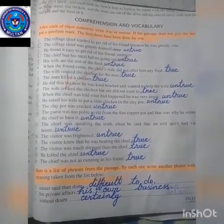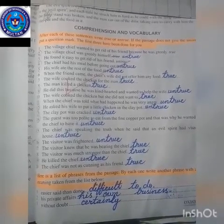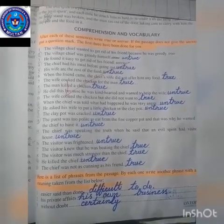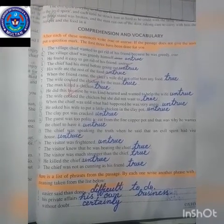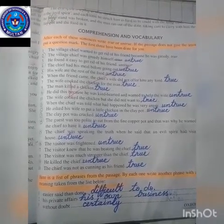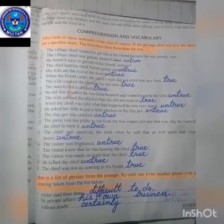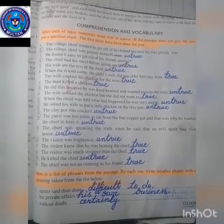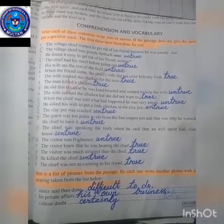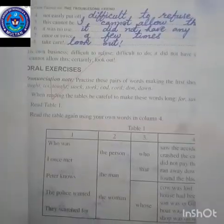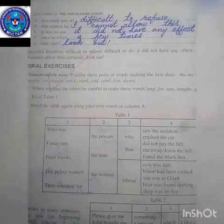Now students, look at Activity B. This activity is about similar phrases. A list is given at the end of this activity, and we have to choose similar phrases according to their suitability. Number one: 'easier said than done' means difficult to do. Number two: 'his private affairs' means his own business. Number three: 'without doubt' means certainly. Number four: 'not easily put off' means difficult to refuse.